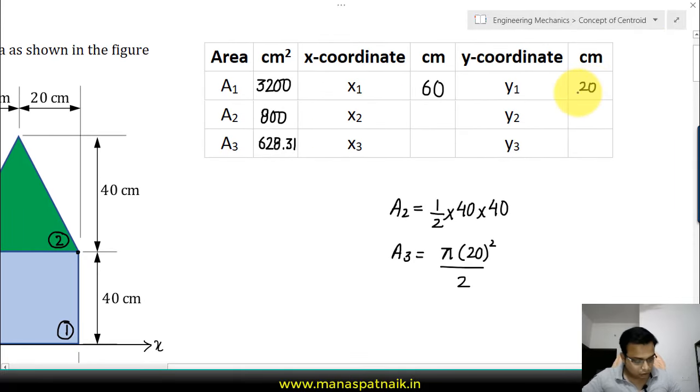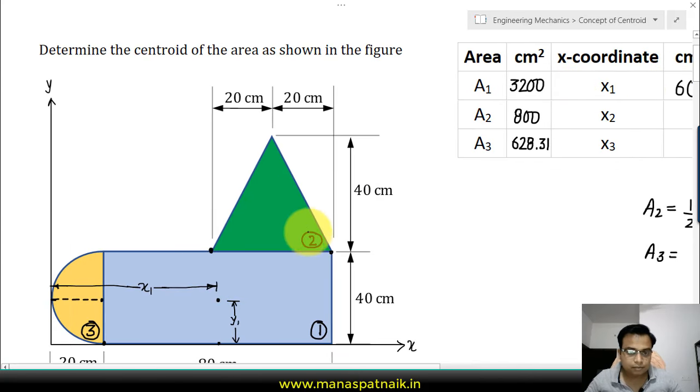Now let's focus on this triangle. Remember, whenever you're dealing with triangle centroid, always try to draw a median from any corner. The centroid will be at a height from the base of h by 3. How much is h for this? It's 40, so this is going to be 40 by 3.